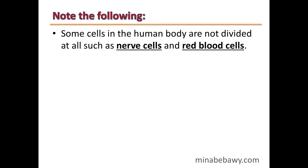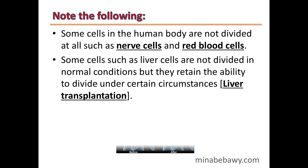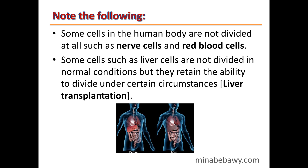Some cells in the human body do not divide at all, such as nerve cells and red blood cells. Some other cells, such as liver cells, do not divide under normal conditions, but they retain the ability to divide under certain circumstances, such as during liver transplantation.